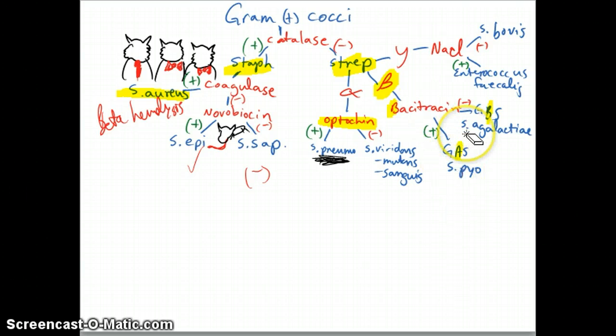And that will help you remember that it is bacitracin sensitive. What resists bacitracin is going to be the baby. So you've got group B strep is bacitracin negative. Group A strep is bacitracin sensitive.